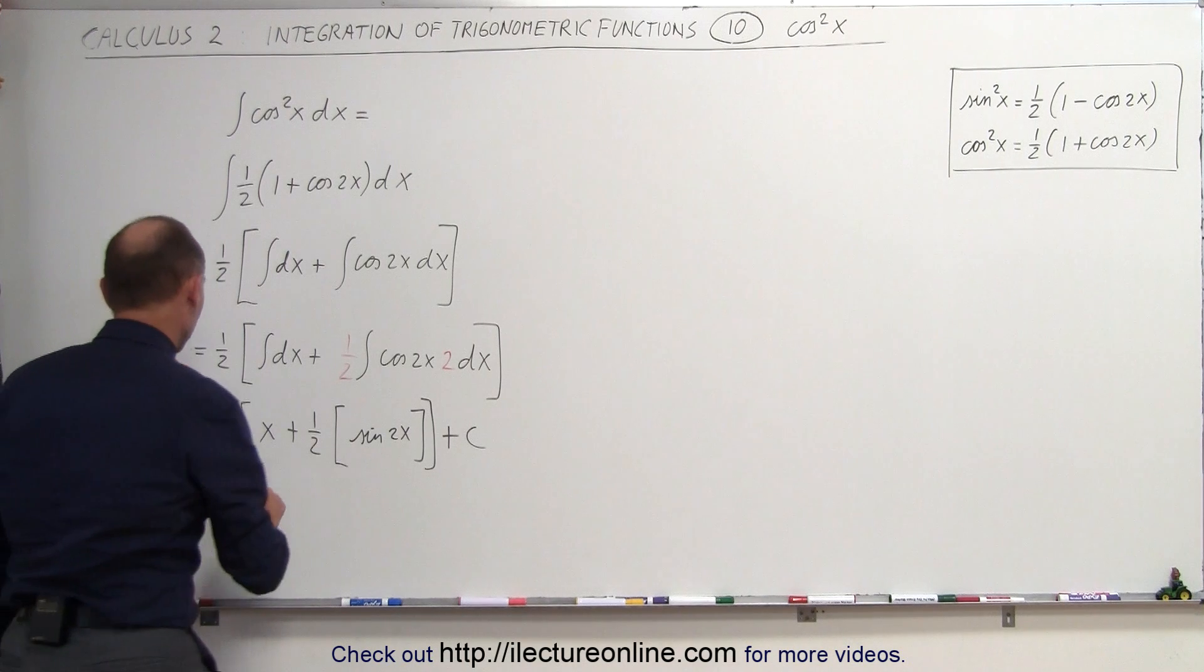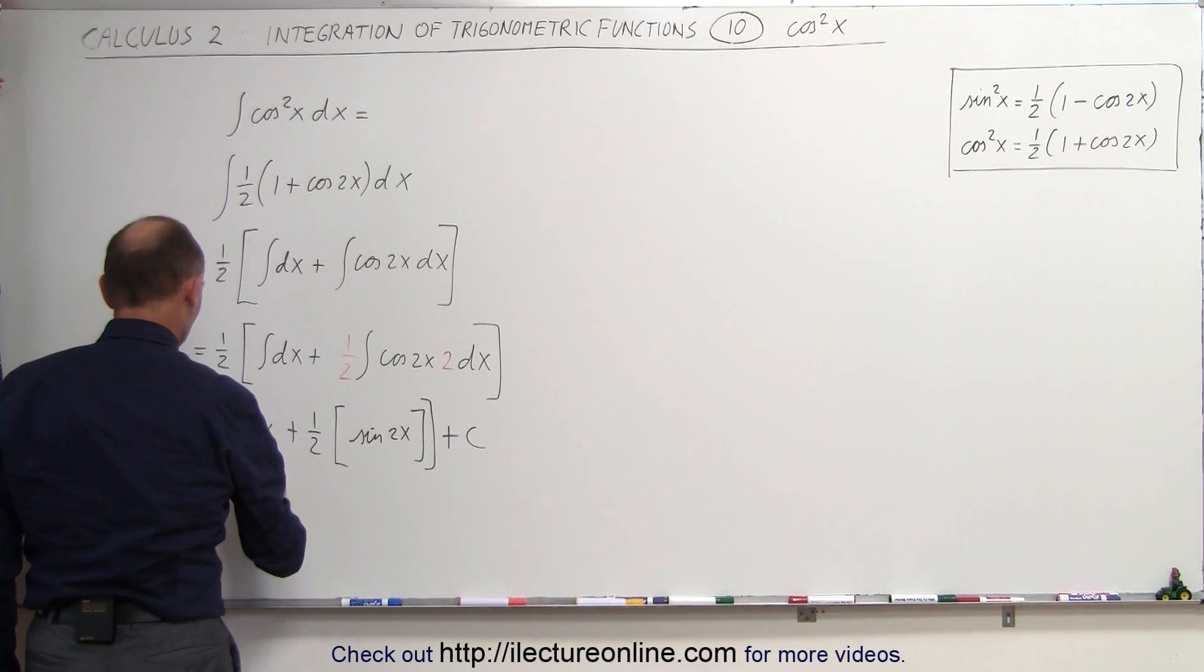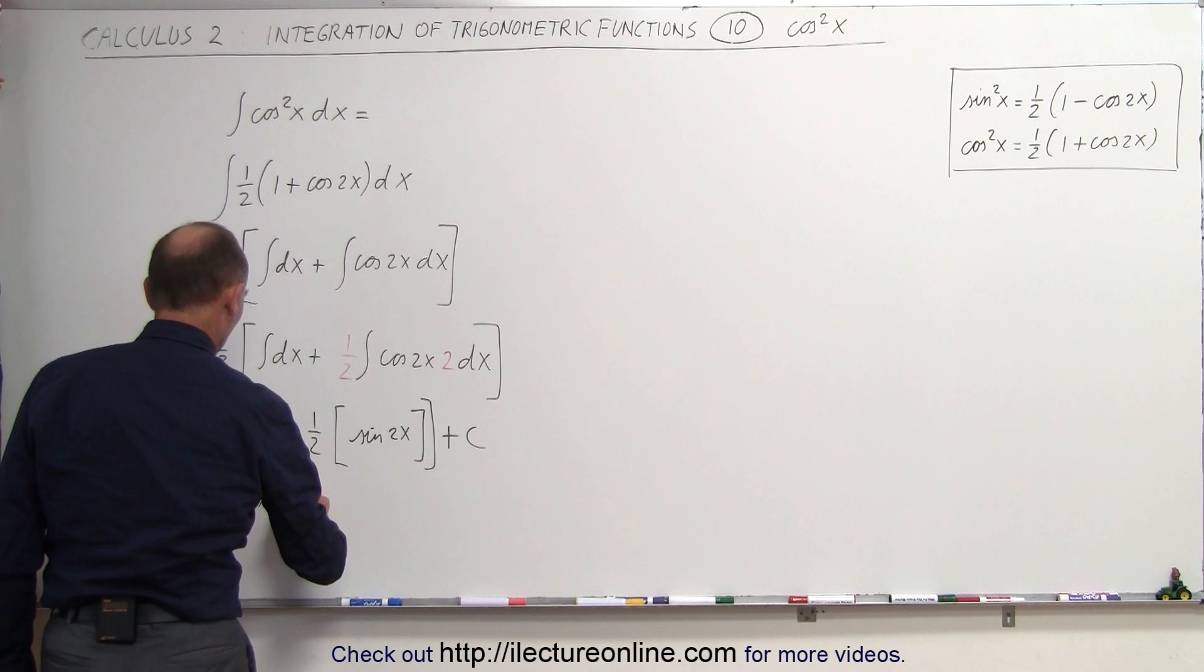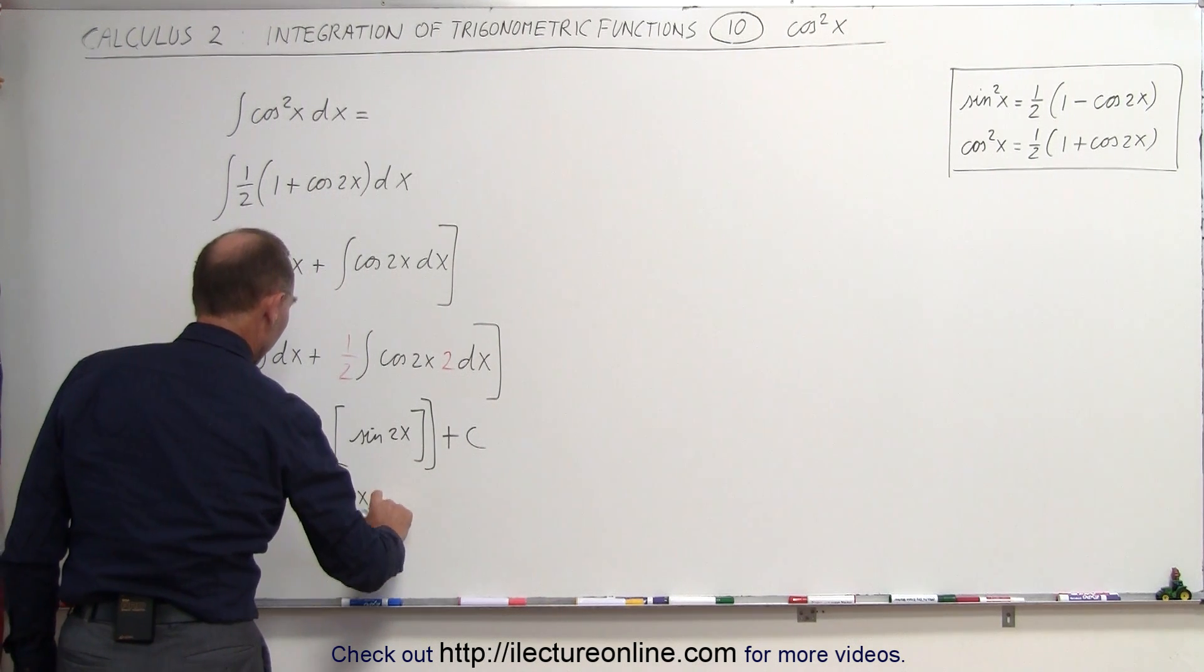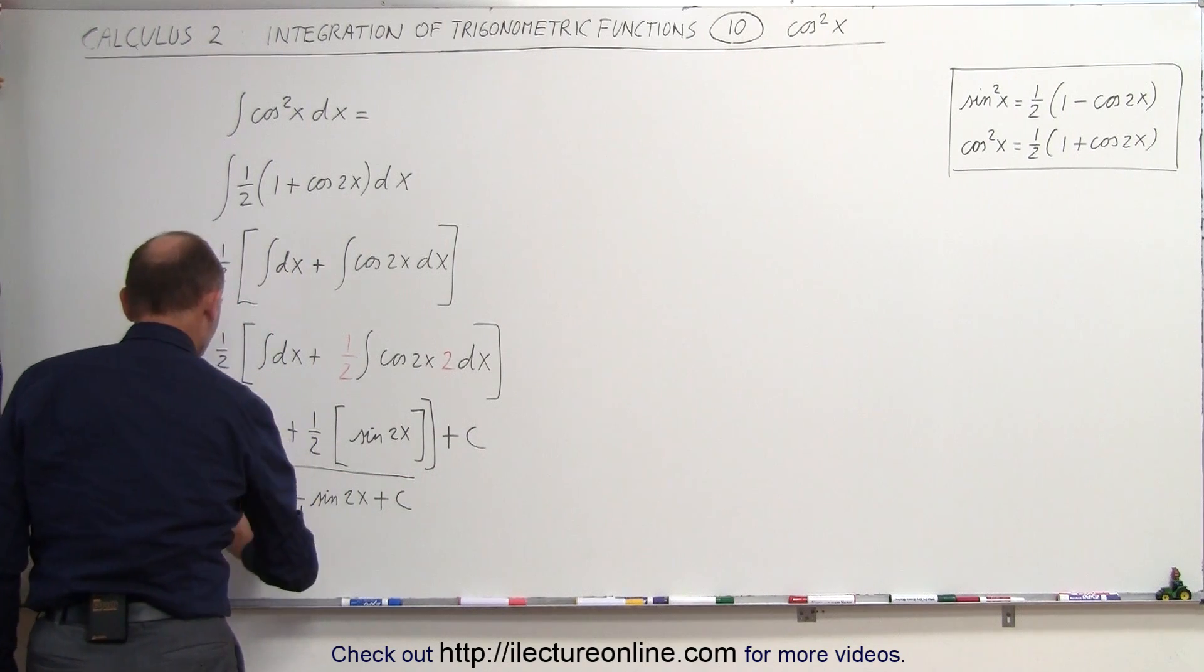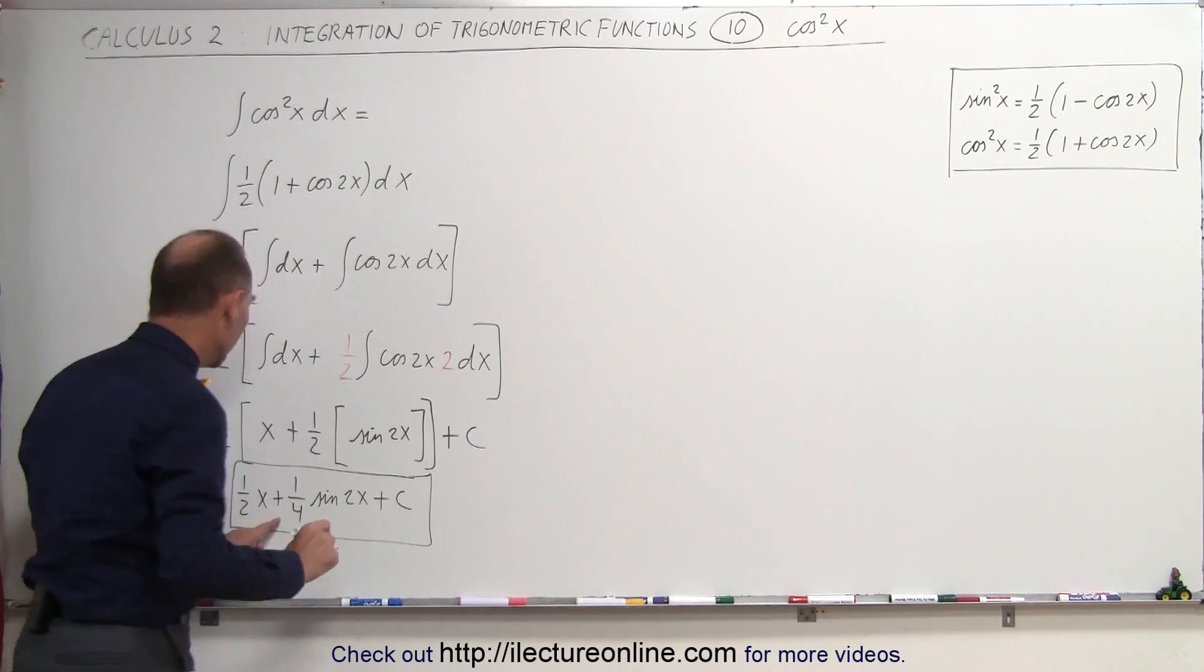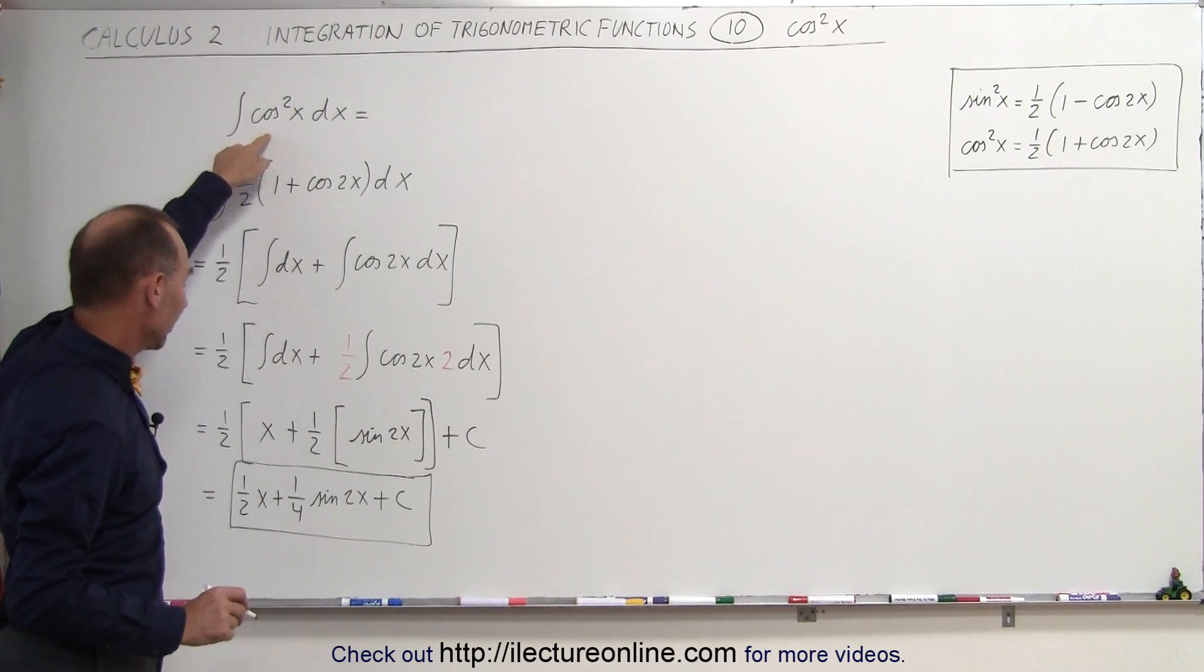Simplifying this a little bit more, this can be written as 1/2 times x plus 1/4 times the sine of 2x plus a constant of integration, and that would be the integral of the cosine squared of x dx.